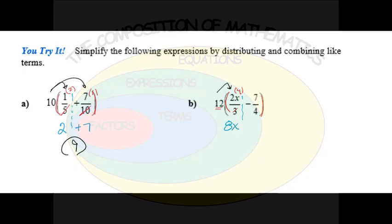Notice I don't cancel the 12 because I'm bringing it over — I still need to distribute to the next term. The 4 in the denominator will cancel with the 12 leaving a 3. So I have negative 7 times 3, which is negative 21. I cannot combine those two terms, so the answer is 8x minus 21.